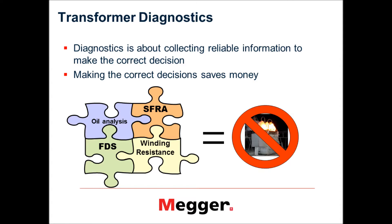But all these tests that we just talked about, none of those tests give me any information about the mechanical condition of the transformer. Has there been any kind of mechanical damage inside the transformer that I am not aware of? What if my windings have shifted? What if my core has shifted or windings have got deformed? None of that kind of information can be picked up by the other electrical tests.